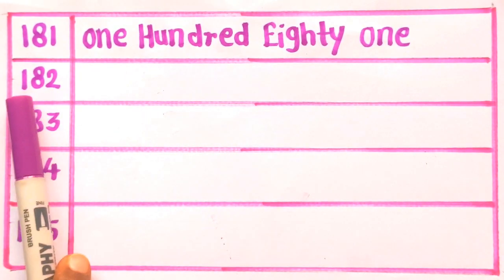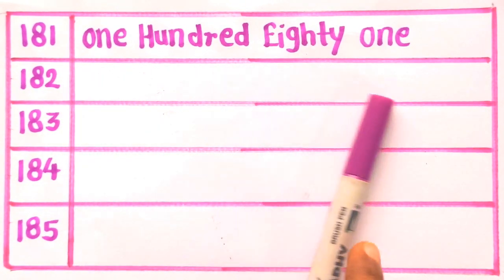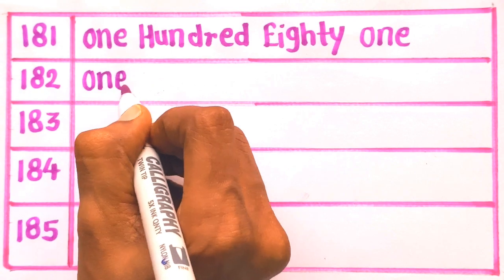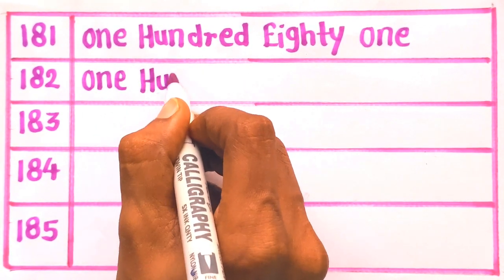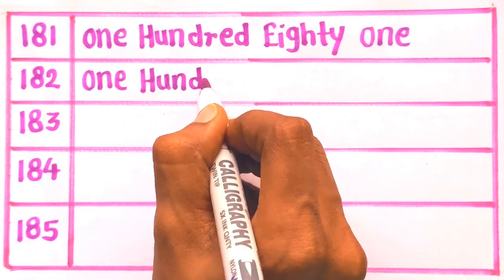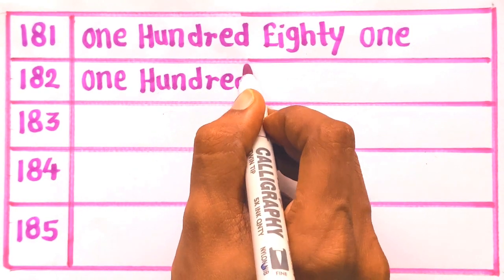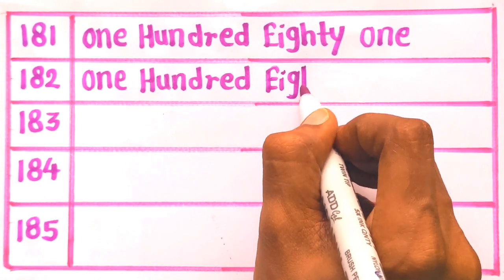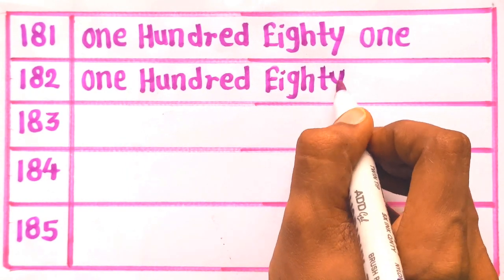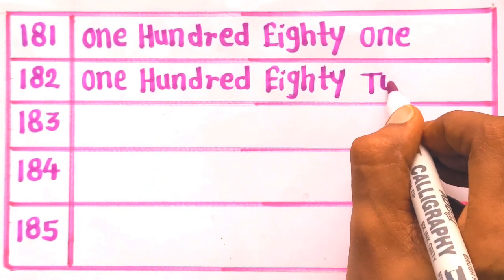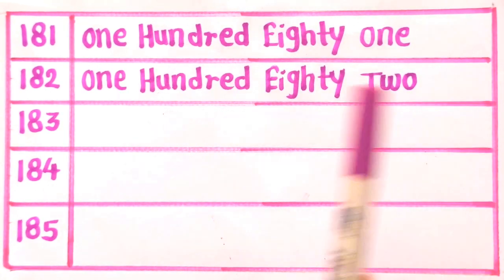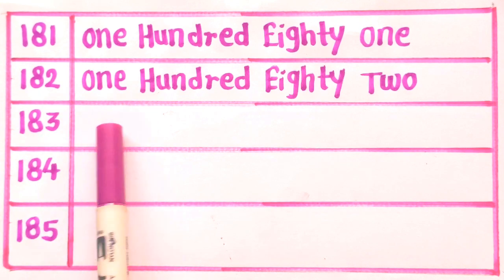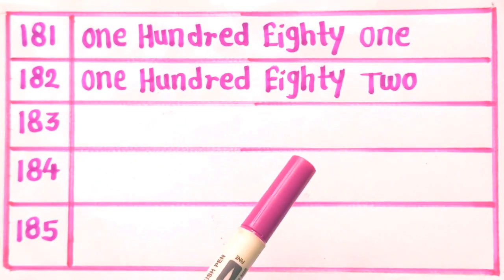Next is 182: O, N, E — 1. H, U, N, D, R, E, D — 100. E, I, G, H, T, Y — 80. T, W, O — 2. One hundred eighty two. 182.